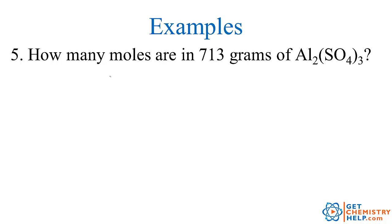Well, we can also turn mass into moles. So how many moles are in 713 grams of aluminum sulfate? So 713 grams aluminum sulfate. And again, we calculated earlier that the molar mass of aluminum sulfate was 342.17 grams per mole.